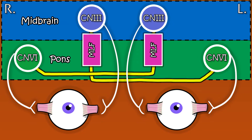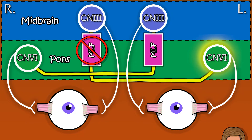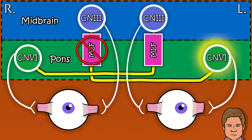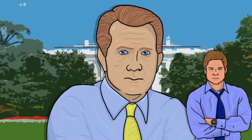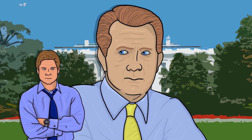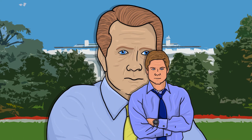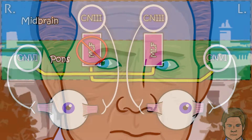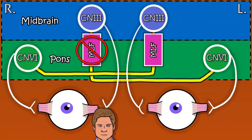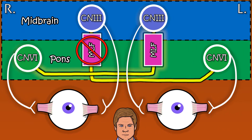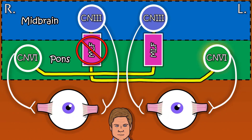Let's imagine that Bartlett's MS is affecting his right medial longitudinal fasciculus. What happens when he tries to look to the left? The left eye abducts successfully, but the right eye is not able to adduct past the midline. Conjugate gaze is unaffected when gazing to the right — it's only when gazing to the left that conjugate gaze is affected when the right medial longitudinal fasciculus is damaged.